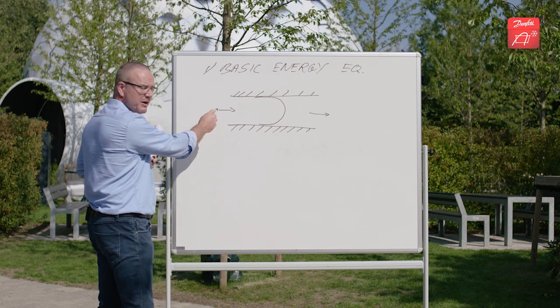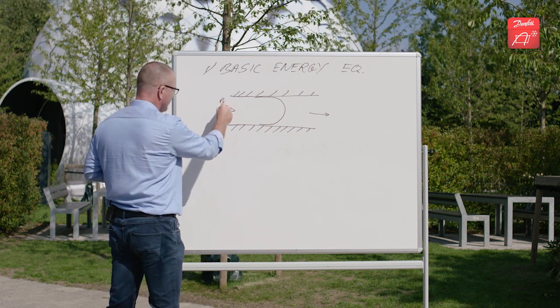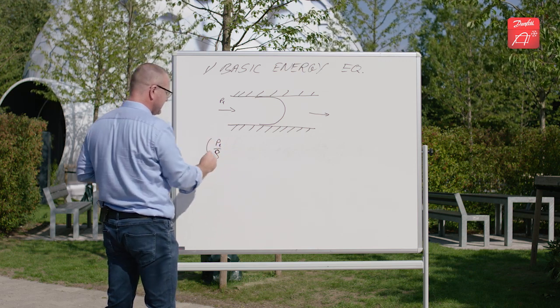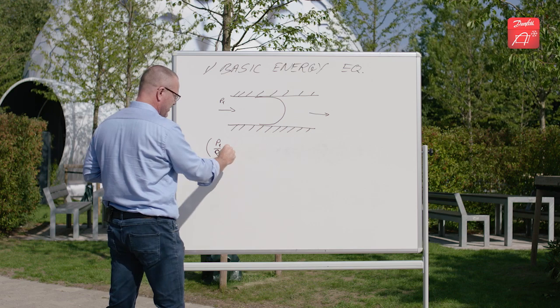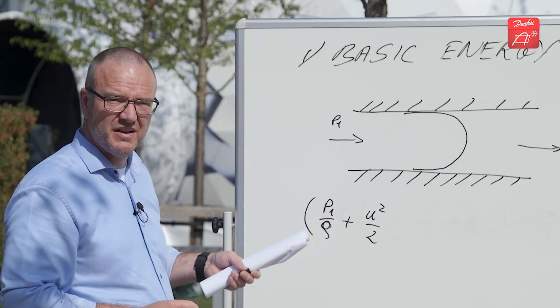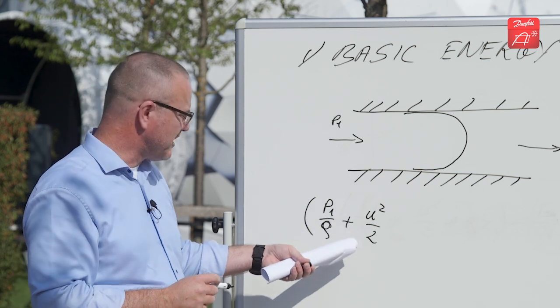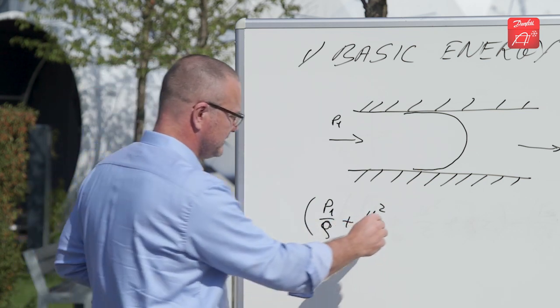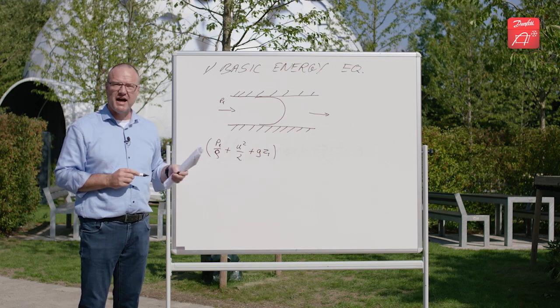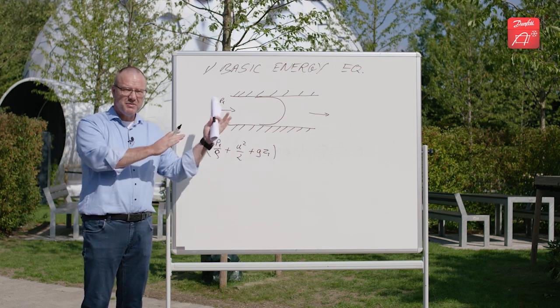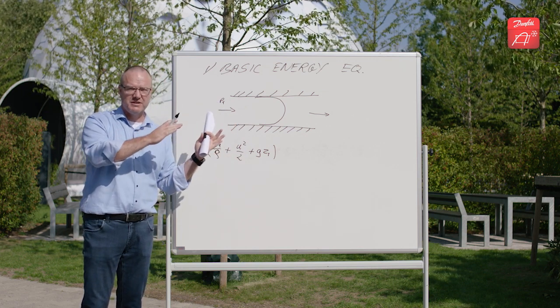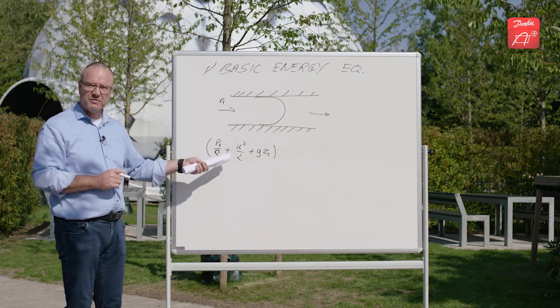First we're looking at what comes in. We're looking at the pressure divided by the density, plus the velocity squared over two - you might recognize this, it comes from the kinetic energy - and then we have the gravity times the height. So when the pipe is inclined, we need to keep track of the height difference because that will cause a pressure difference. So this is what comes in.